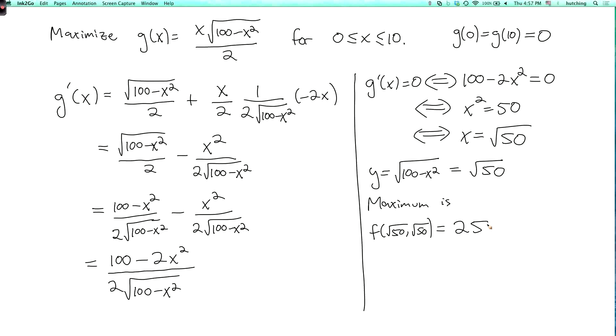So we've proved that the maximum area is obtained by taking both of the legs of the triangle to have equal length, square root of 50, and then the hypotenuse will have length 10 and the triangle will have the maximum possible area 25.